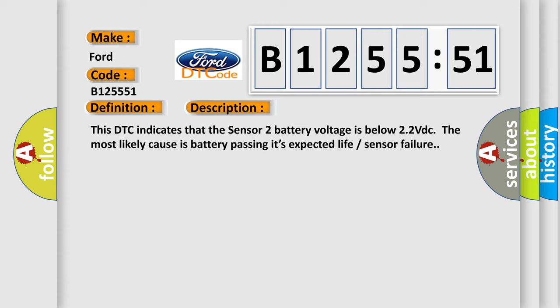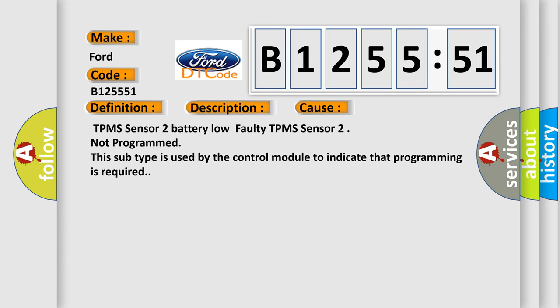And now this is a short description of this DTC code. This DTC indicates that the Sensor 2 battery voltage is below 2.2 VDC. The most likely cause is battery passing its expected life or sensor failure. This diagnostic error occurs most often in these cases.